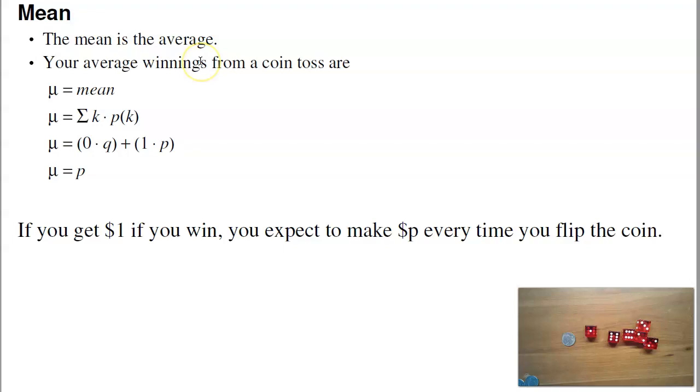The mean is the average. You can think of that as expected winnings. If I win a dollar every time I flip a coin, on average I'll get 50 cents. If I get a dollar every time I roll a 1, I'm expecting to gain 1 sixth of a dollar. The mean of a Bernoulli trial is the sum of k times the probability of k. So when k equals 0, the probability of 0 is q. The probability of 1 is p. Add them all up, I get p. The average of a Bernoulli trial is p.